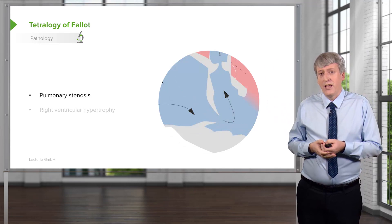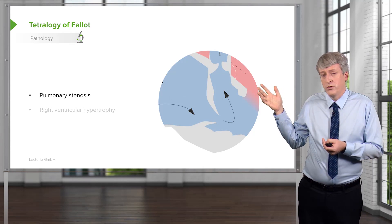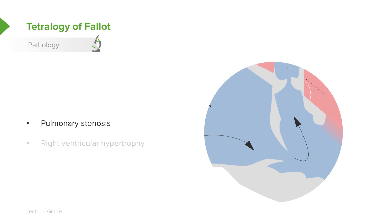Additionally, these patients have pulmonary stenosis. As that area shifts over to allow for the overriding aorta, there's a squeezing of the pulmonary artery resulting in stenosis. That narrowed pulmonary stenosis then results in right ventricular hypertrophy. So you have the VSD, the overriding aorta, pulmonary stenosis, and right ventricular hypertrophy.